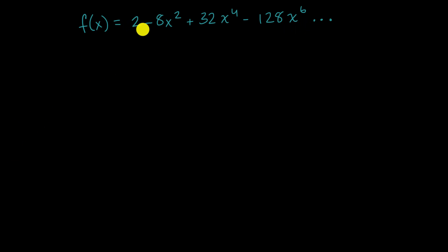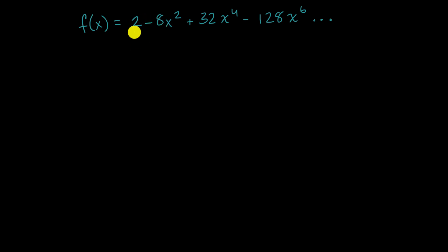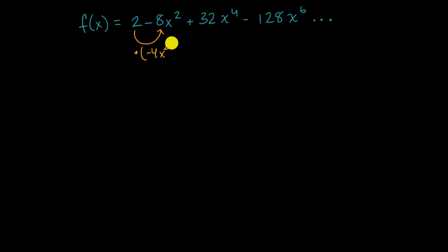First let's confirm that this is an infinite geometric series. In order for it to be a geometric series, each successive term has to be some common ratio times the previous term. To go from two to negative eight x squared, you have to multiply by negative four x squared.